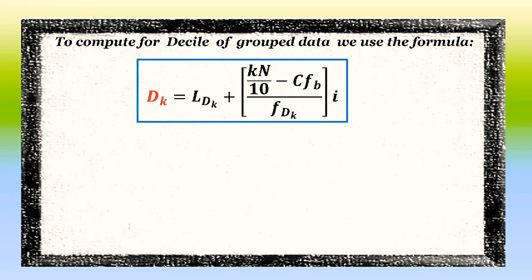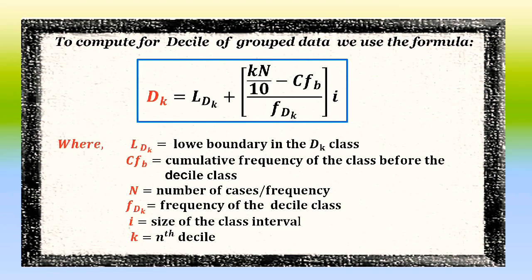The formula for decile for group data is: D sub K equals L sub DK plus the quantity K times N all over 10 minus CF sub B, all over F sub DK, times I. Where L sub DK is the lower boundary of the D sub K class, CF sub B is the cumulative frequency of the class before the decile class, N is the number of cases or frequency, F sub DK is the frequency of the decile class, I is the size of the class interval, and K is the nth decile.